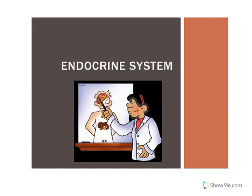Tropic hormones target another endocrine gland and control the secretion of a hormone. There were a number of tropic hormones produced by the hypothalamus that targeted the anterior pituitary gland and regulated the secretion of various hormones, with growth hormone being one of them. Let me list the other hormones produced by the anterior pituitary.